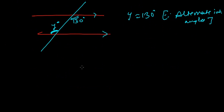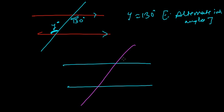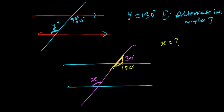Let me give you one more example. Let's say this angle is 30°, and you need to find out the value of x°. By simple linear pair — if this is a straight line and this is 30° — then the other angle should make 180° together, so this should be 150°: 150 + 30 = 180°. Now if that angle is 150°, then the alternate interior angle must also be 150° because in parallel lines, alternate interior angles are always equal.